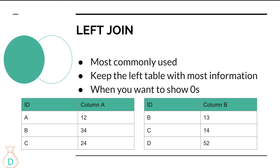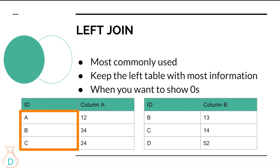Left join is actually the most commonly used join. For example, you keep your sales data on the left and look up customer information like first name and last name from a second table. You don't want to lose any of your sales data, even if a customer isn't in your customer base. So if the first table has A, B, C and the second has B, C, D — you keep everything A, B, C and map B and C from the second table. Anything not found in the second table will be blank.